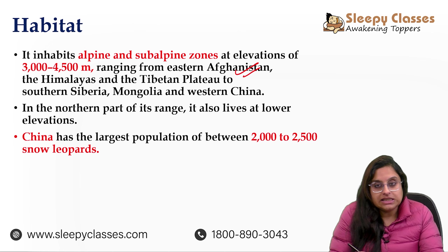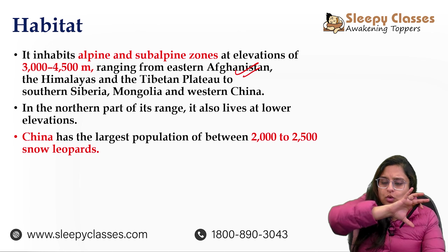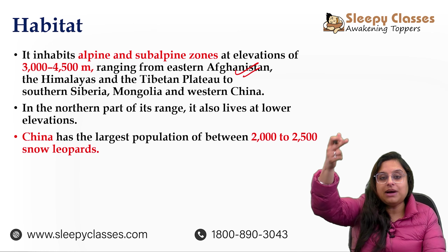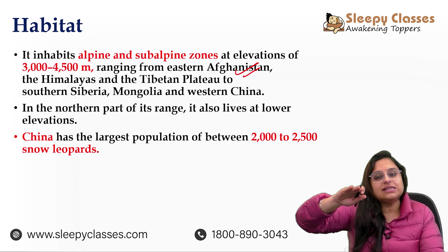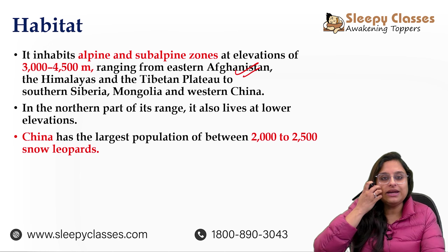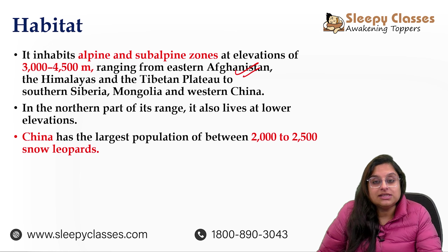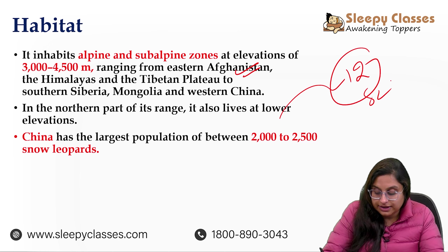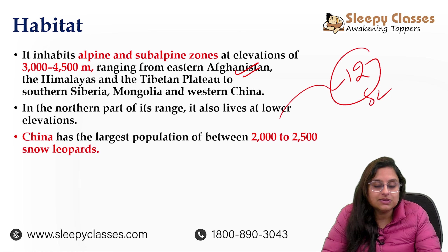It is found in eastern Afghanistan, Central Asian countries, Mongolia, China — throughout milta hai aapko. Aur agar hum northern part of the range pe dekhen, toh lower elevations pe milta hai. Sabse zyada snow leopards kahan milte hain — China mein. Total 12 snow leopard range countries hain — baara desh hain duniya mein jahaan snow leopard milta hai. India is one of them, aur sabse zyada snow leopards China mein milte hain.